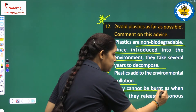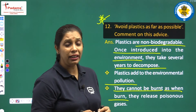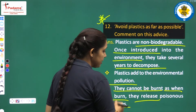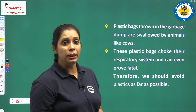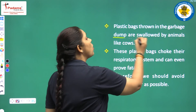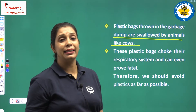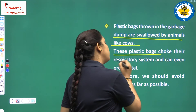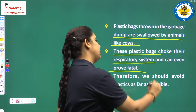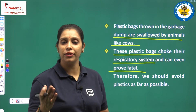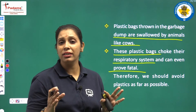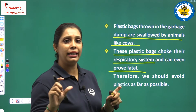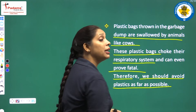Plastics cannot be burned easily — when burned they give an anxious smell and also release toxic or harmful fumes into the environment. They release poisonous gases. Plastic bags thrown in garbage dumps are swallowed by animals like cows, and that leads to the death of street animals. These plastic bags choke their respiratory system and can prove fatal. Therefore we should avoid plastic as far as possible.